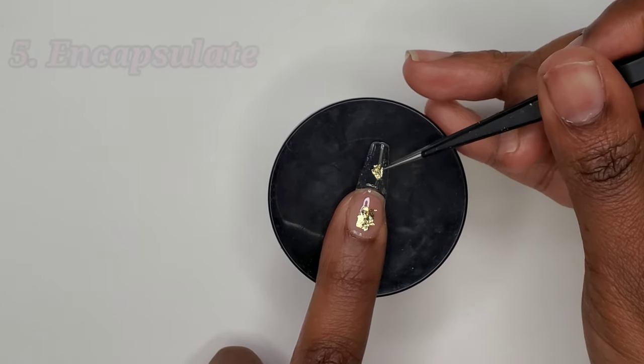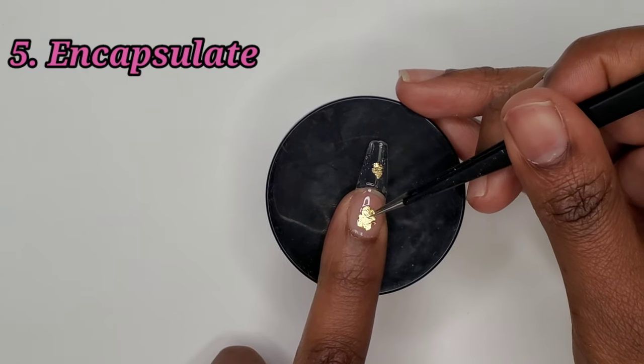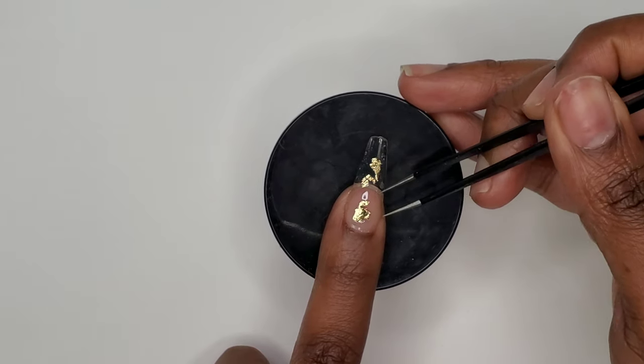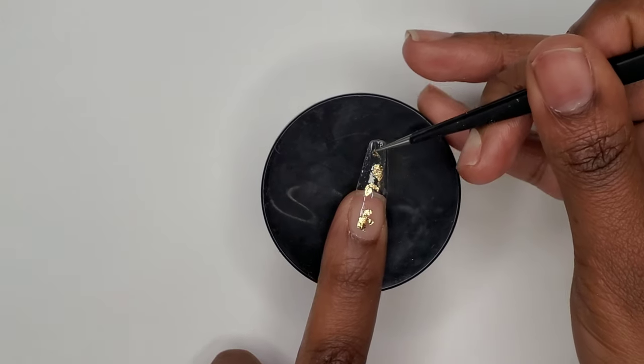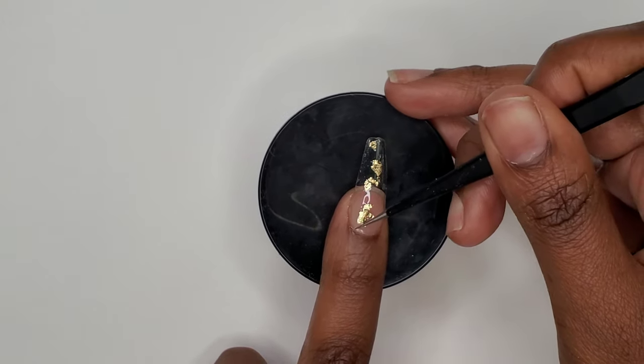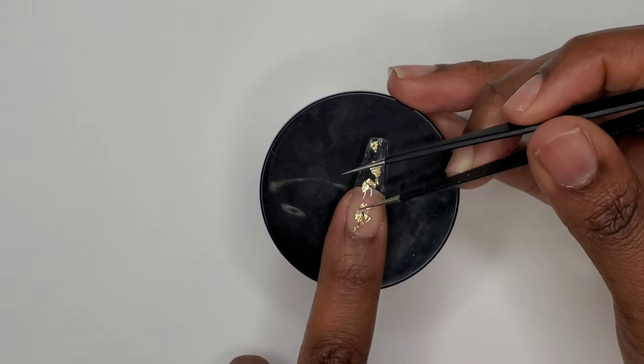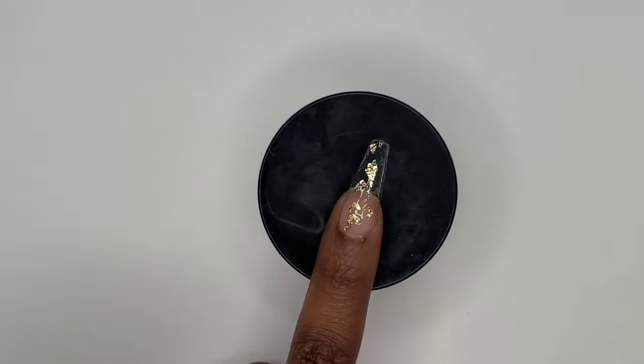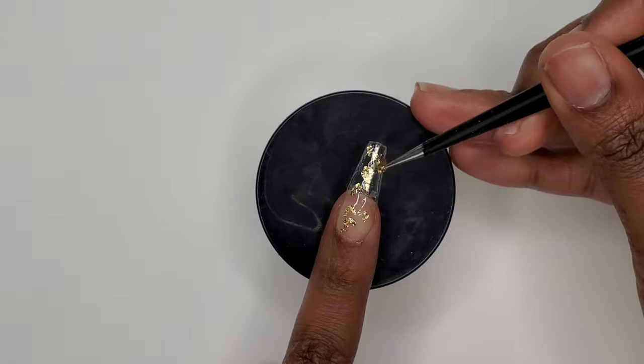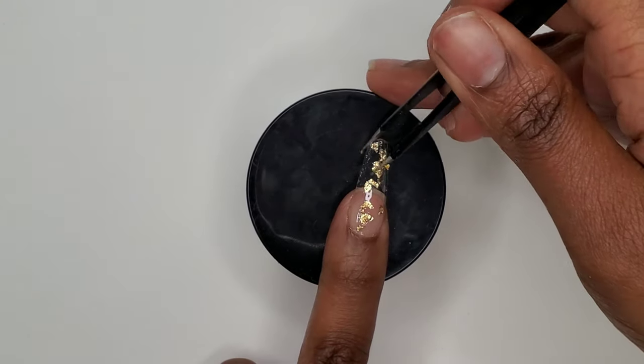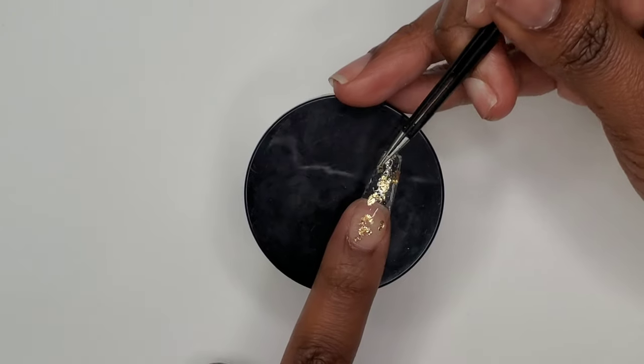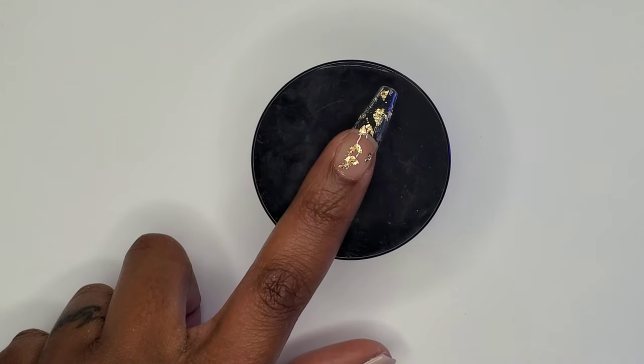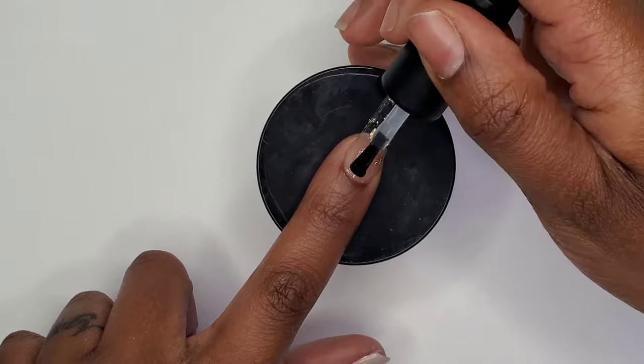The fifth way I like to use my rubber base coat is to encapsulate. To encapsulate these foil flakes I did apply a thin layer of rubber base coat. I did not cure it and I went in with my foil flakes. I would only suggest using this rubber base coat to encapsulate items that are thin like these foil flakes or thin pieces of glitter. I know some glitters are thick. I would not suggest doing that because you might have a hard time getting the base coat to fully cover that glitter. Also whatever you choose to encapsulate make sure that it is flat and there are no parts of it sticking up or that are rough before you go in with your second layer of base coat.